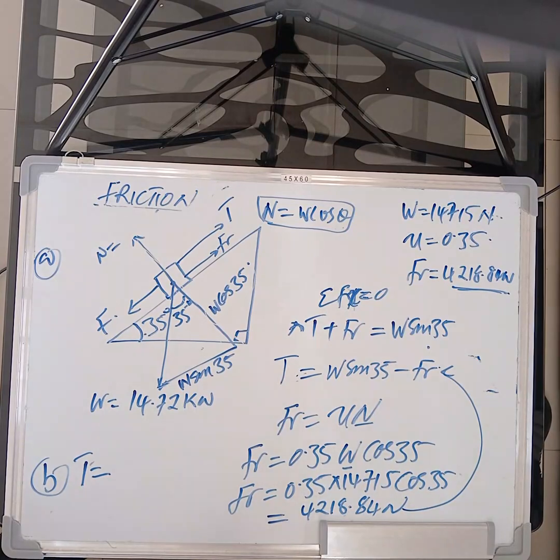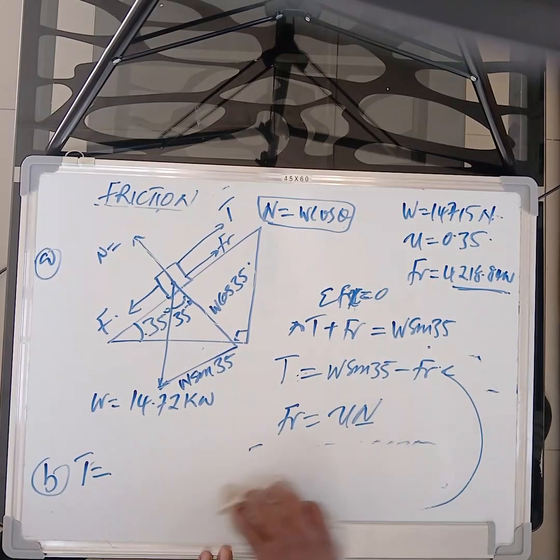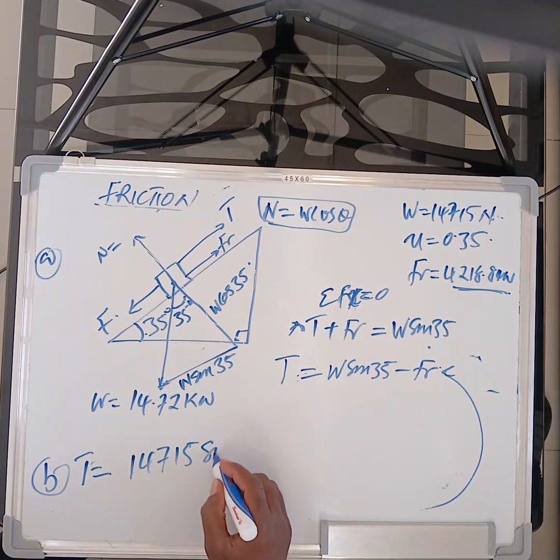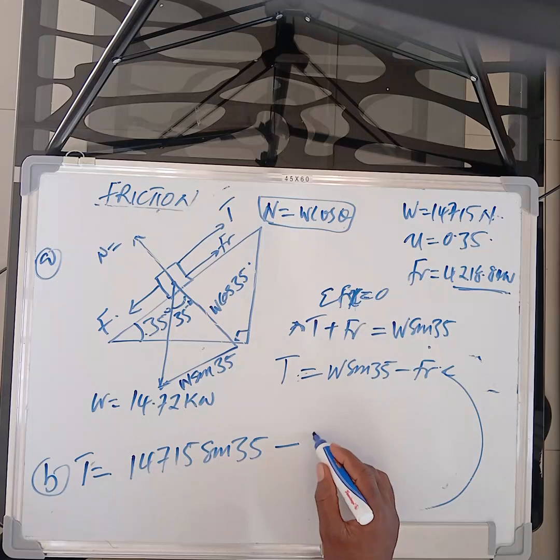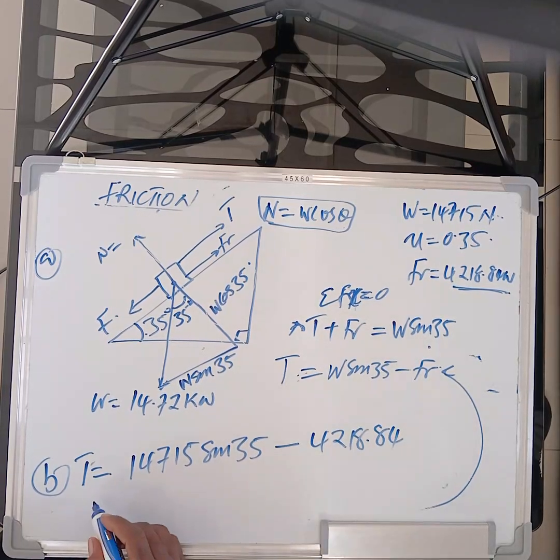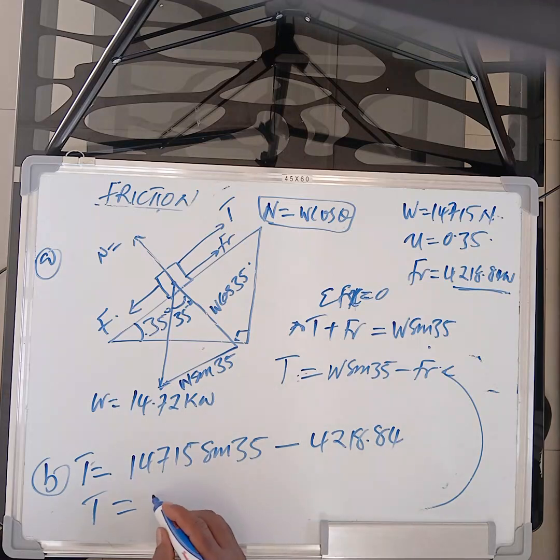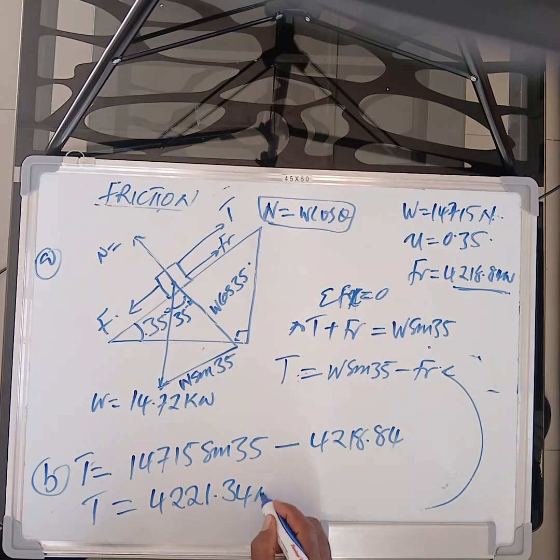So T is equal. Let me remove this so that at least because we already have it. At least the board must be a little bit clear. So we are putting that into that T is equal to W. Remember my W is that sine 35 minus the friction force is 4218.84. So let me see in the comment section what your friction force should be. So you can just pause the video. Mine should give me 14715 sine 35 minus 4218.84. So my tension in the cable that is being used to lower the machinery part for me, it's giving me a little bit. Give me 42234 newtons.